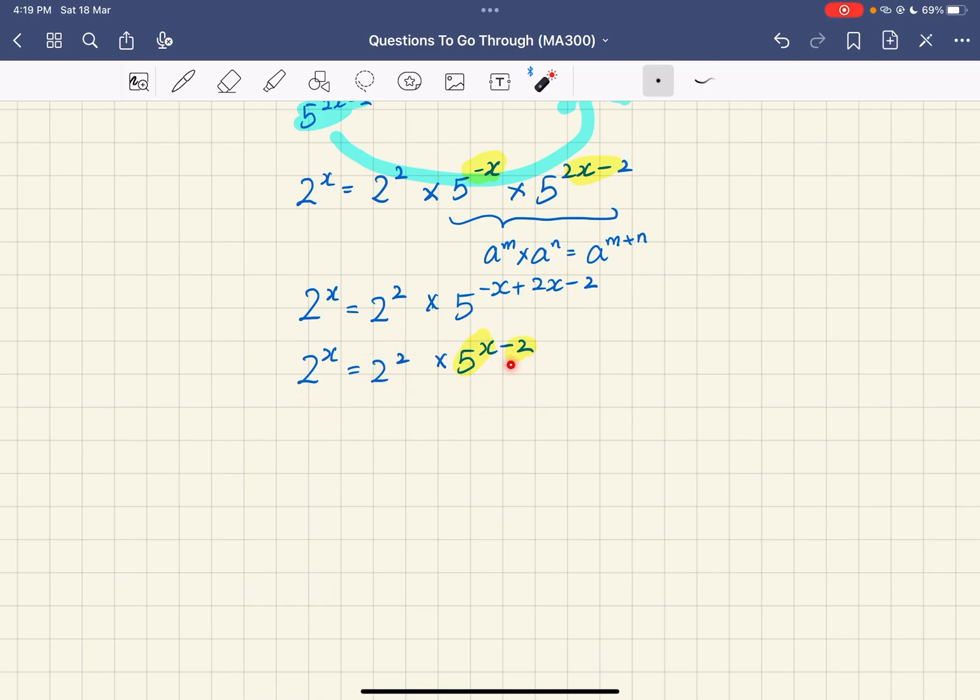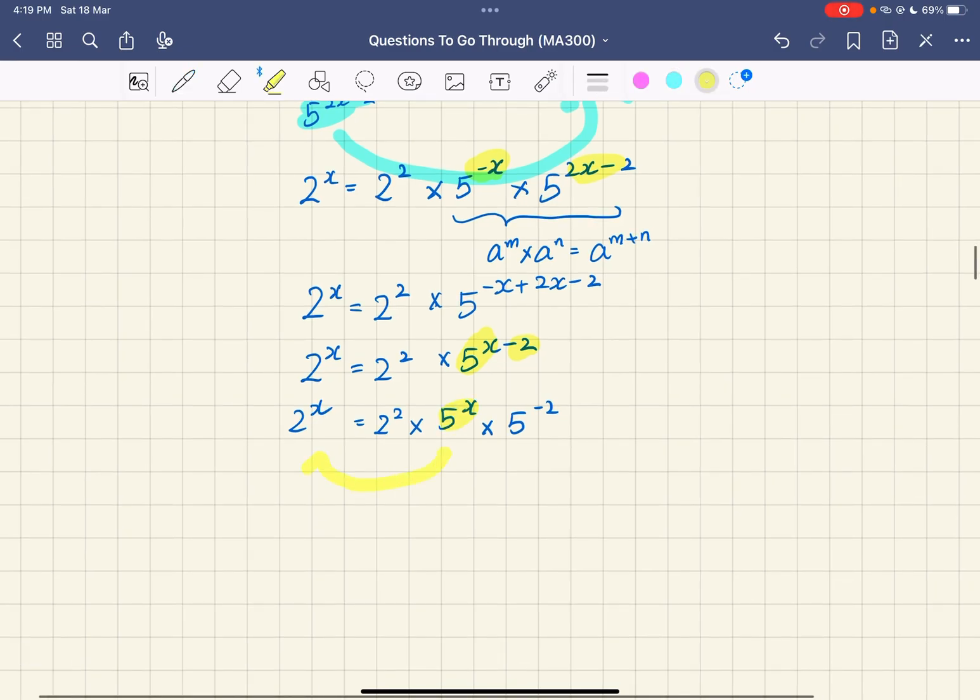Now here, 2^2 - let me split it up. This is 5^x times 5^(-2). I'm going to get there very soon. Now I push this term over to the right side. 2^x divided by 5^x - what I'm left with on the right is just 2^2 multiplied by 5 to the power of negative 2. The calculator will tell you this is 4 over 25 on the right-hand side.